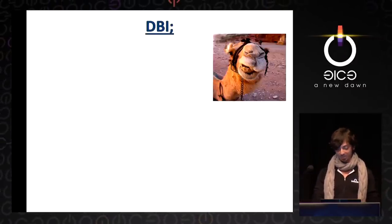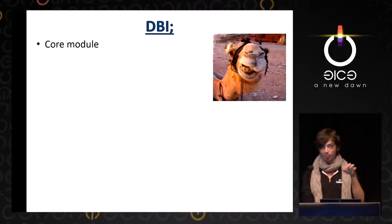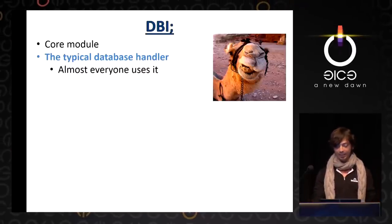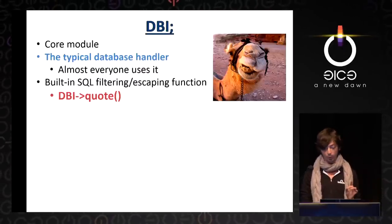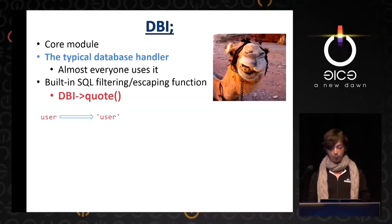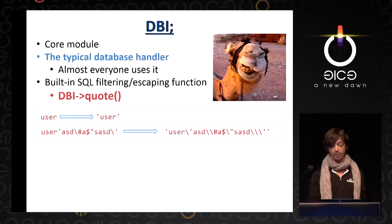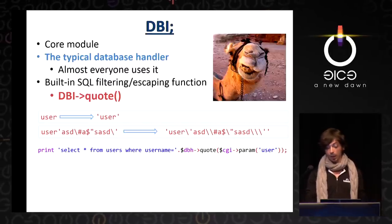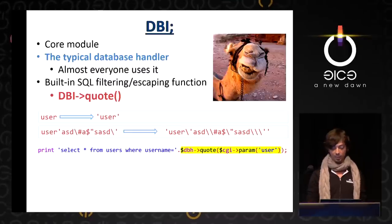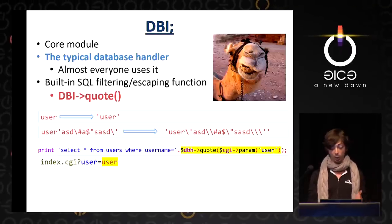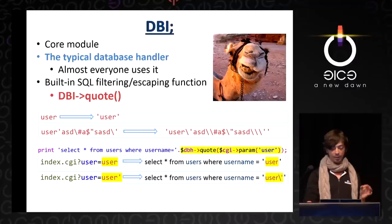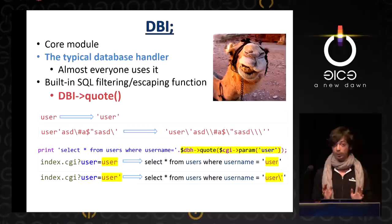Let's look at DBI quote. DBI is a core module since 1994 — it is the most common way to communicate with databases and almost everyone uses it. It has only one function for defending against SQL injections: quote. If we send a regular string, the function places it inside two apostrophes. If we try to inject something, quote will escape it so it's safe to use inside the query. Let's see a regular example: we'll quote the user CGI parameter and insert it into a query. Insert a regular user string, a regular query is printed. Try to inject an apostrophe, quote takes care of it and escapes it. Looks safe — after all, it's been there for more than two decades.